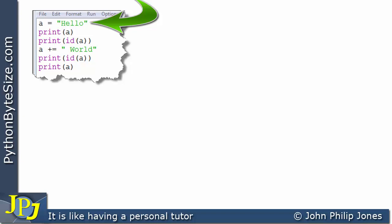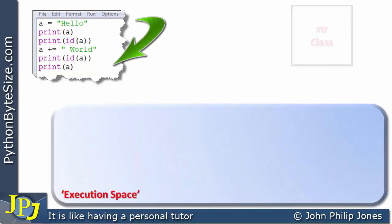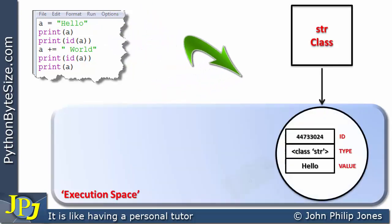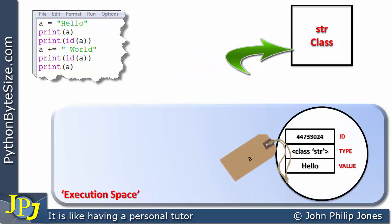If we look at the execution space for this and the model we've been using so far in our descriptions of simple programs, we know we have an execution space and we have a string class. We produce this instance of the string class, i.e., an object which we can see as an ID, a type, and the value. We can see the value is hello.